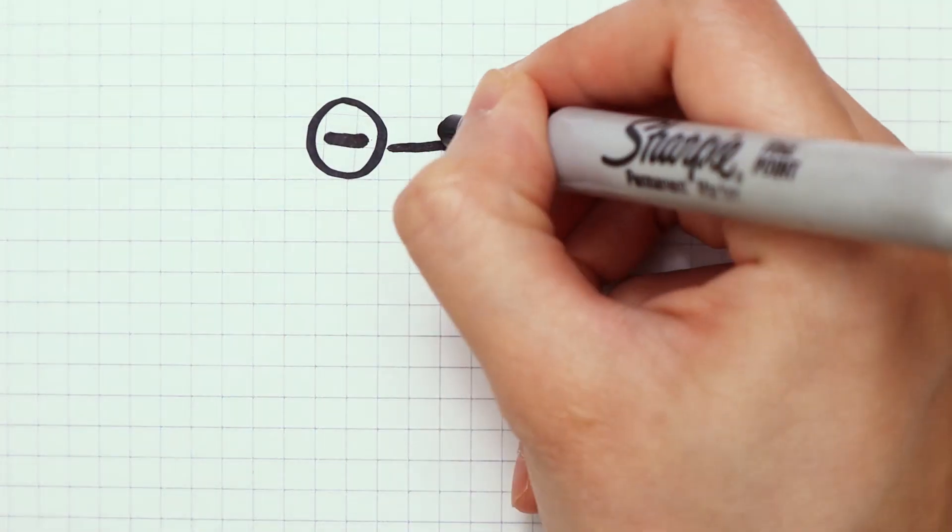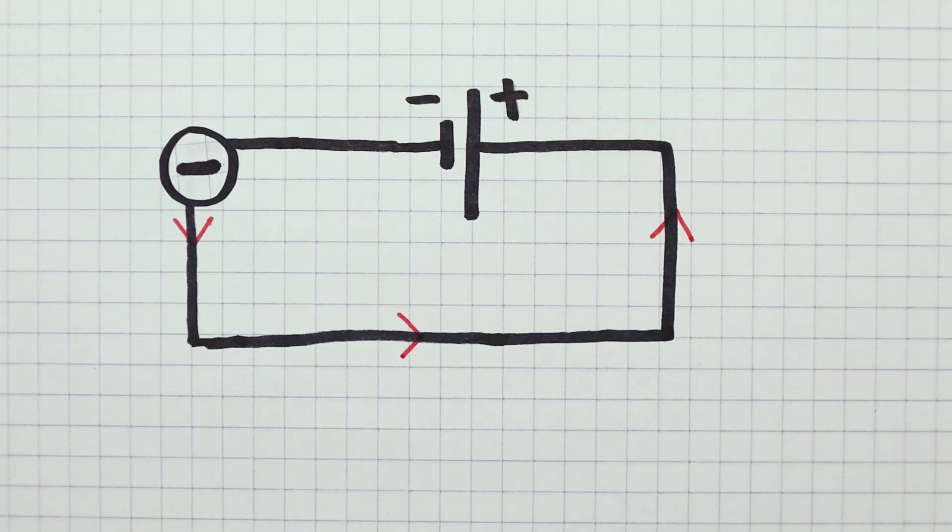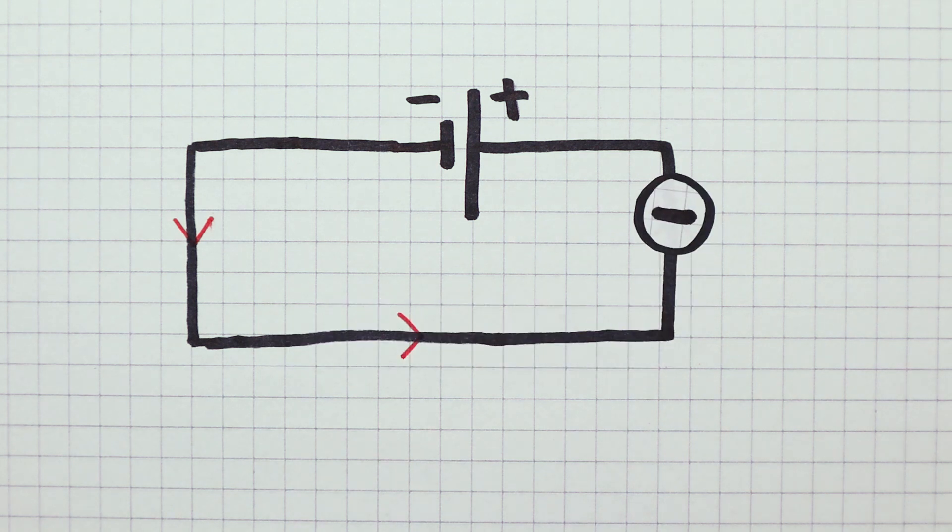Wrong! We know that in metals, the charge carrier is the electron, which is negative. So charge should go from the negative terminal to the positive terminal.